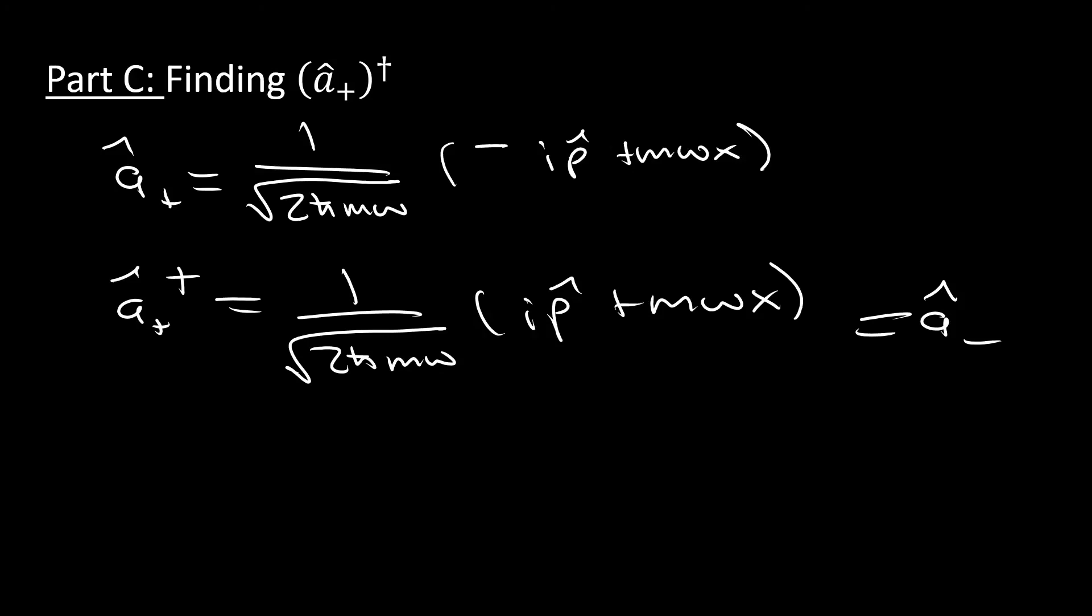So that is Griffith's problem number 3.5, working with some Hermitian conjugates. If you have any questions, feel free to ask away. And hopefully I was able to help you out. If I was, let me know. Otherwise, hope to see you next time.